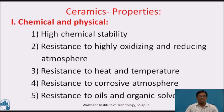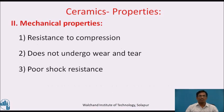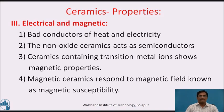Properties of ceramics — chemical and physical: high chemical stability, resistance to highly oxidizing and reducing atmospheres, resistance to heat and temperature, corrosive atmospheres, as well as to oils and organic solvents. Mechanical properties: resistance to compression, does not undergo wear and tear, poor shock resistance. Electrical and magnetic properties: it is a bad conductor of heat as well as electricity. Non-oxide ceramics act as semiconductors. Ceramics containing transition metal ions show magnetic properties, and magnetic ceramics respond to magnetic fields, which is known as magnetic susceptibility.